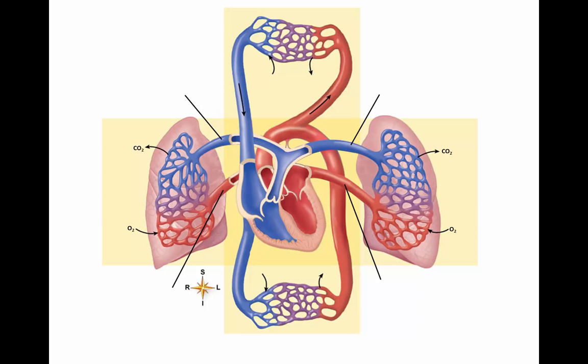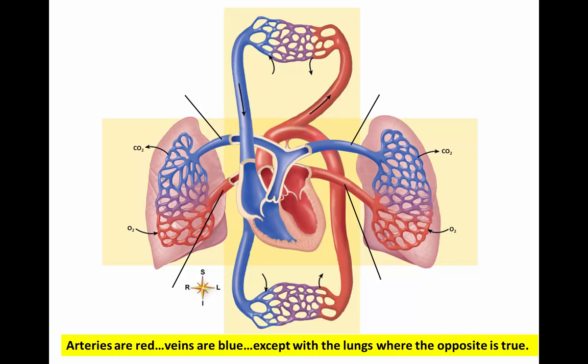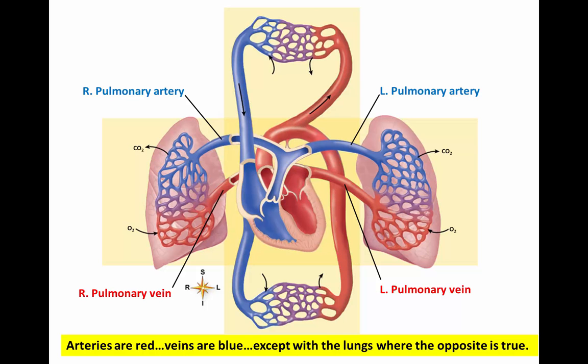In order not to mix up the pulmonary arteries and veins, remember this saying: arteries are red, veins are blue — except with the lungs, where the opposite is true. Pulmonary arteries transport deoxygenated blood away from the heart, so pulmonary arteries are blue. Pulmonary veins transport oxygenated blood back to the heart, so pulmonary veins are red.